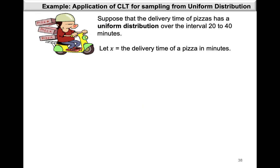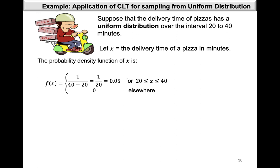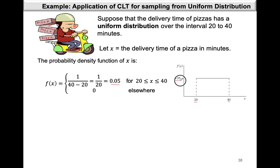Now in this example, suppose that the delivery time of pizzas has a uniform distribution over the interval 20 to 40 minutes. We can define x as the delivery time of a pizza in minutes, and the probability density function of x is 1 / (40 - 20), which gives us 1/20, equivalent to 0.05. A sketch of the probability density function looks like a rectangle, with x-axis values ranging from 20 to 40, and the probability density function value is 0.05.